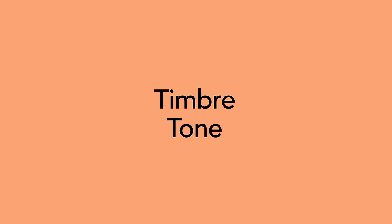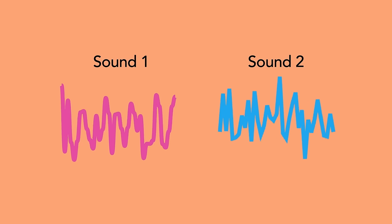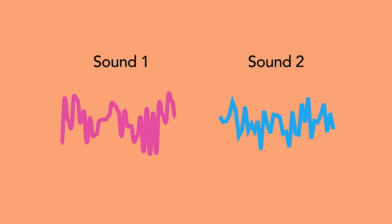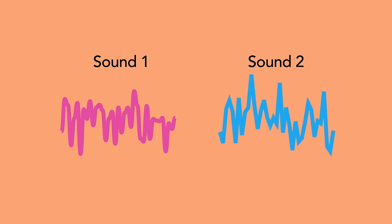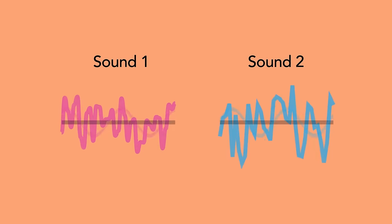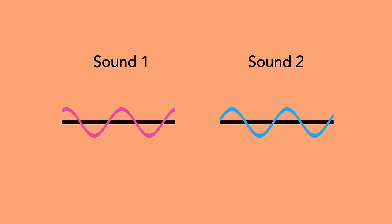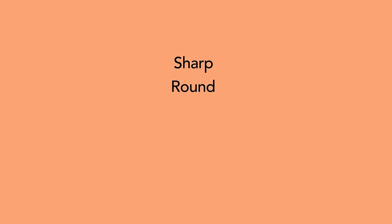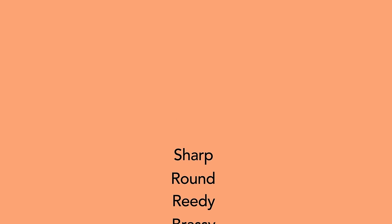Timbre — another word for timbre is tone. Timbre is the distinguishing characteristic that differentiates one sound from another, despite the fact that they might be playing the same frequency with the same amplitude. When we're describing a sound's timbre, we use words like sharp, round, reedy, brassy, or bright to describe them.